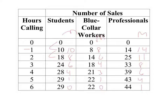The equimarginal principle tells us we have to equate the marginal benefit per dollar spent on each good. However, this is not a financial budget constraint — it's a time constraint. Spending an hour soliciting students is the same as an hour spent soliciting blue-collar workers or professionals. So this problem is similar to a consumer problem where all goods have the same price. We don't have to divide by any value — each marginal value already represents the marginal benefit per hour spent for each category.